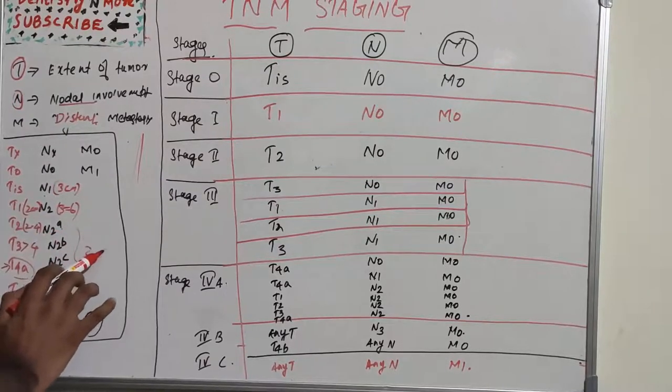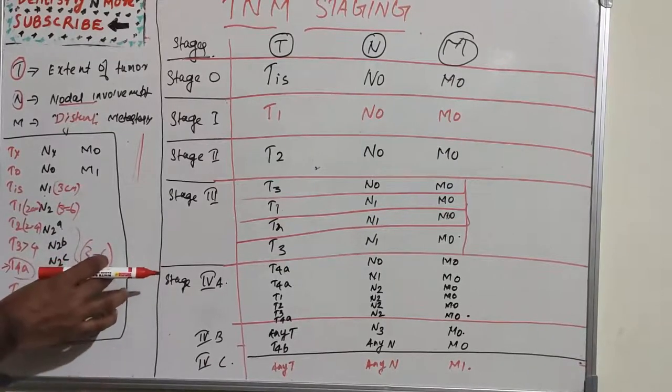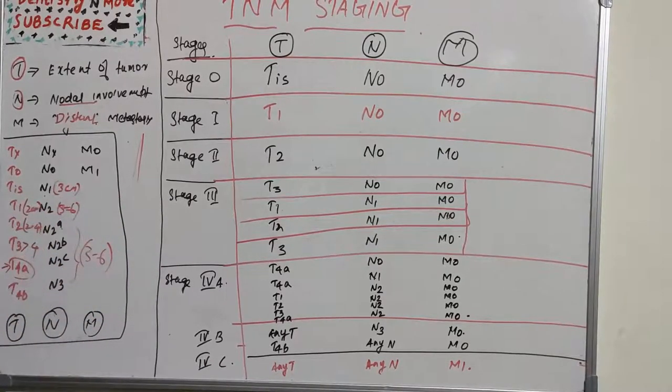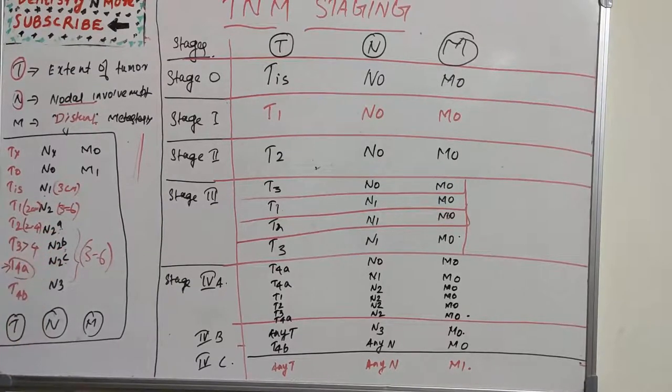N2B is multiple ipsilateral. N2C is bilateral nodal involvement, but none greater than 6 centimeters—all are 3 to 6 centimeter dimension. The greatest dimension of the nodes is up to 6 centimeters. N2A is ipsilateral single, N2B is multiple ipsilateral, and N2C is bilateral.